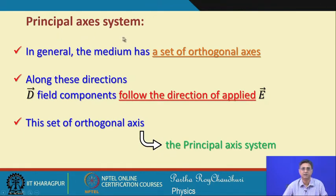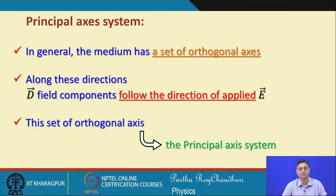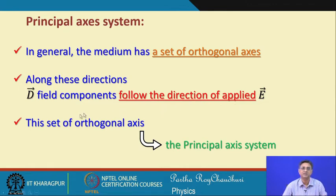In the principal axis system, the medium has a set of three orthogonal axes along which the D field components follow the direction of the applied field. If we search for a set of orthogonal coordinate axes within the medium, there exists one system in which the displacement field follows the electric field in the same direction — such a set is known as the principal axis system of the medium.